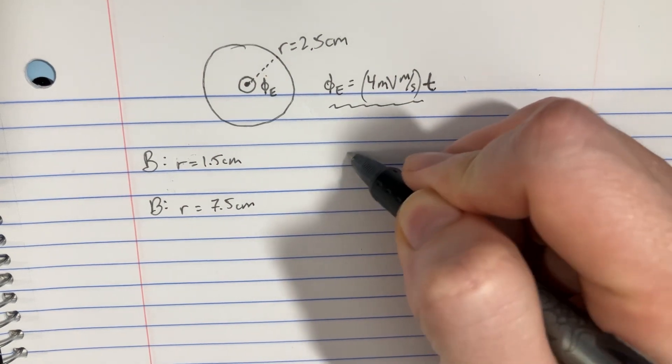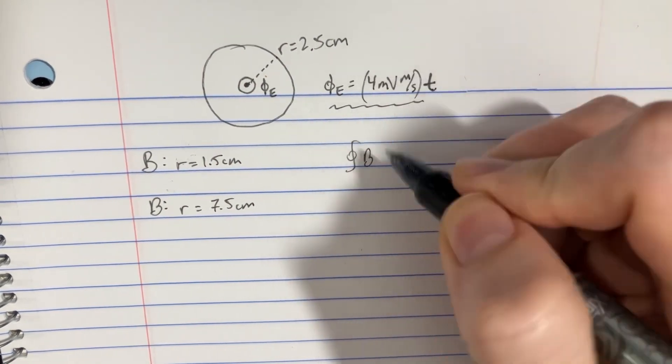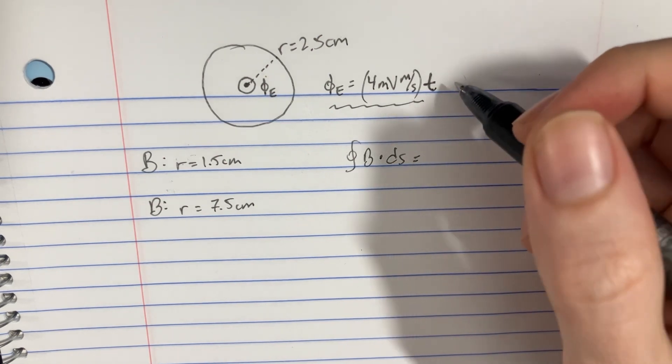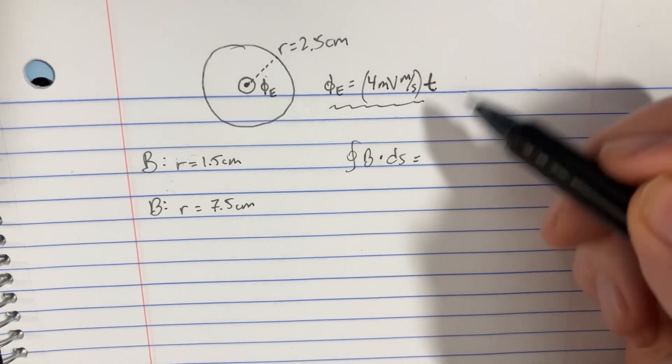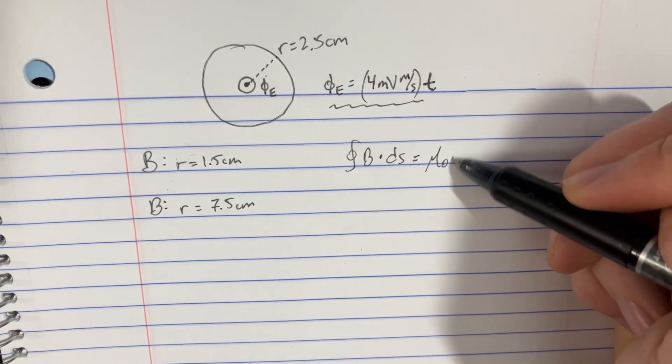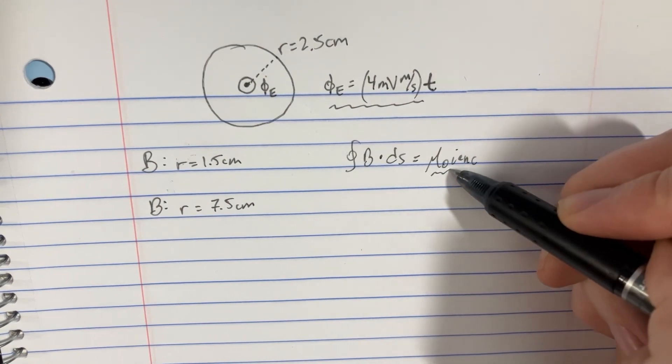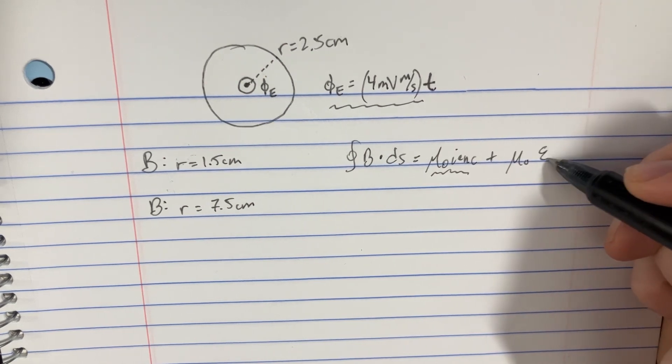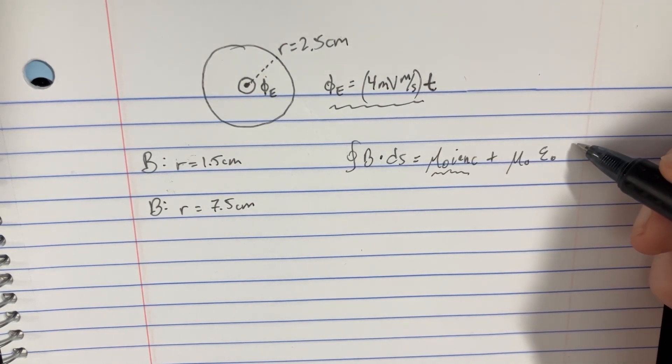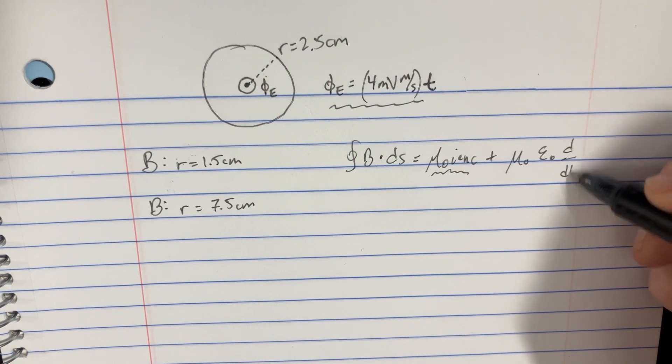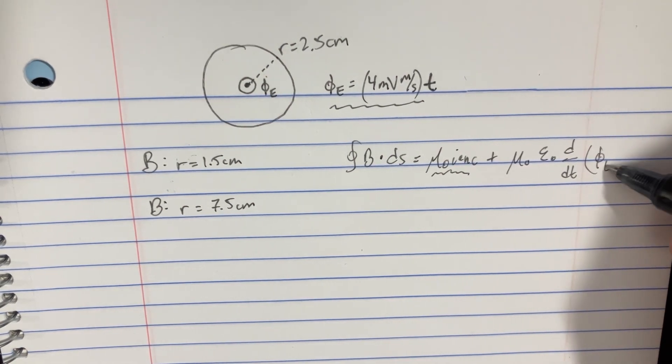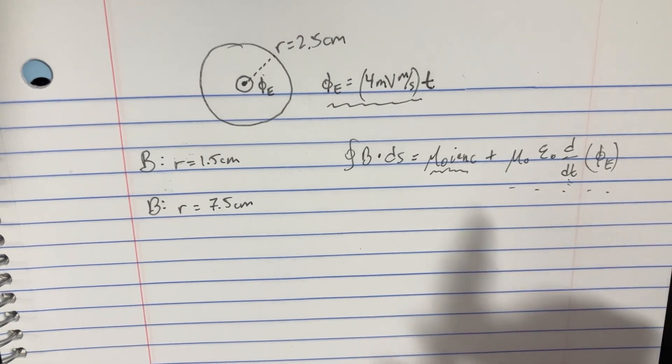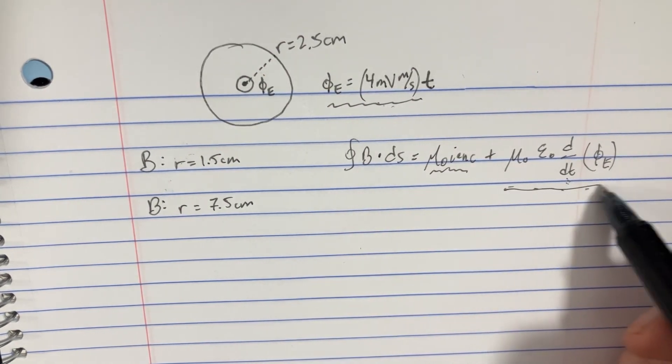which is going to say B dotted with ds equals, in this case we're going to ignore the mu naught i enclosed portion because there's no current, but we do have the epsilon naught derivative of the flux happening. Because the flux is changing over time, we know that we can use this portion.